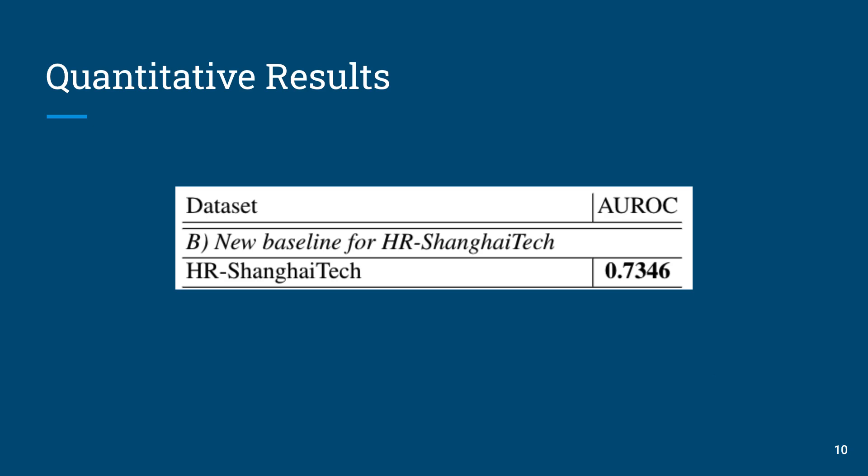HR-ShanghaiTech is structured in a camera-wise manner, however this is not the case for HR-Crime. Therefore, to ensure consistency between the two datasets, we trained the MPAD-RNN architecture again on the whole HR-ShanghaiTech training set from all 12 cameras. The model obtained achieves a slightly lower performance of 0.7346 compared to the performance reported by the authors, indicating that camera settings can influence the complexity of the anomaly detection problem when using MPAD-RNN.